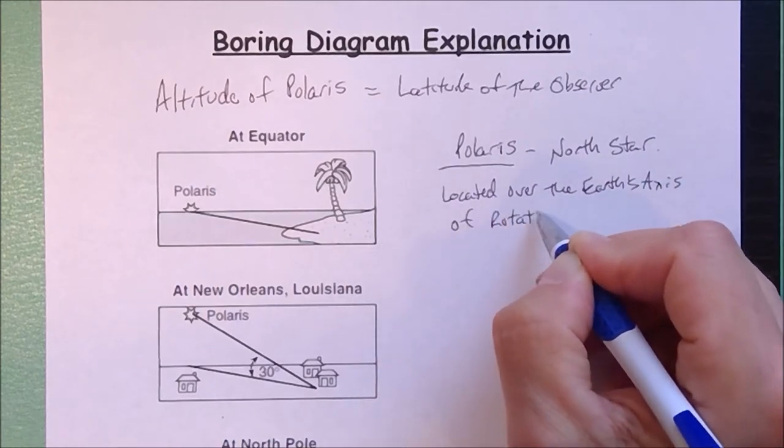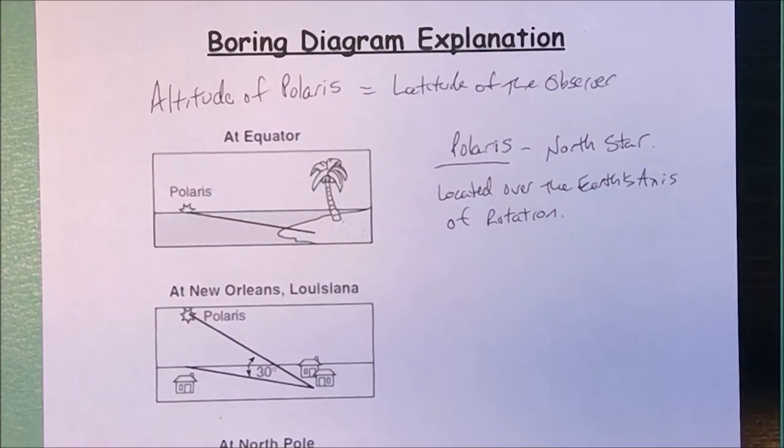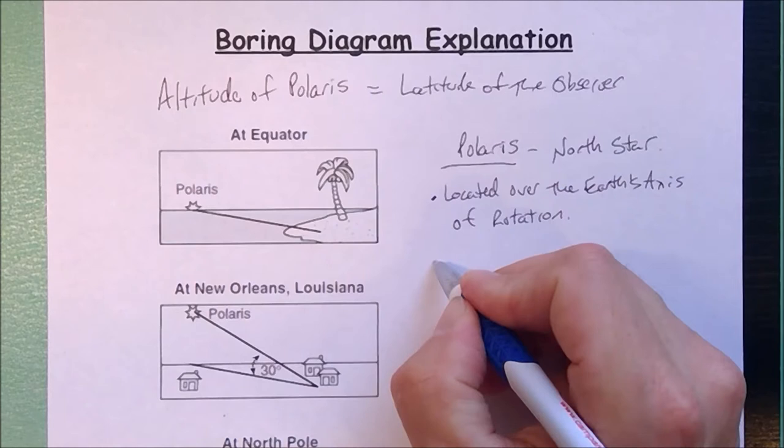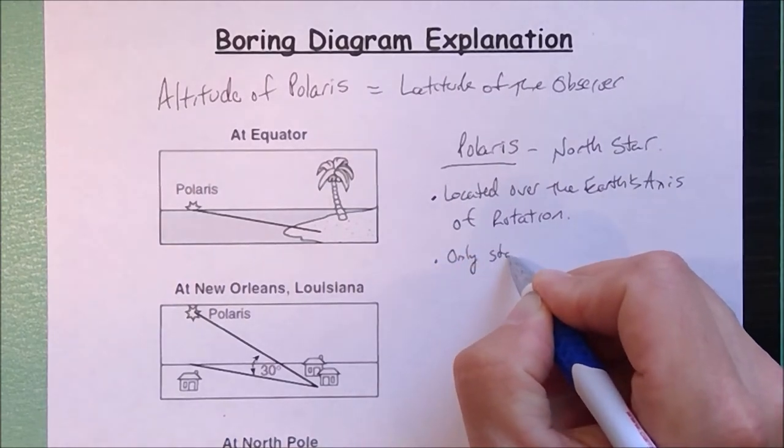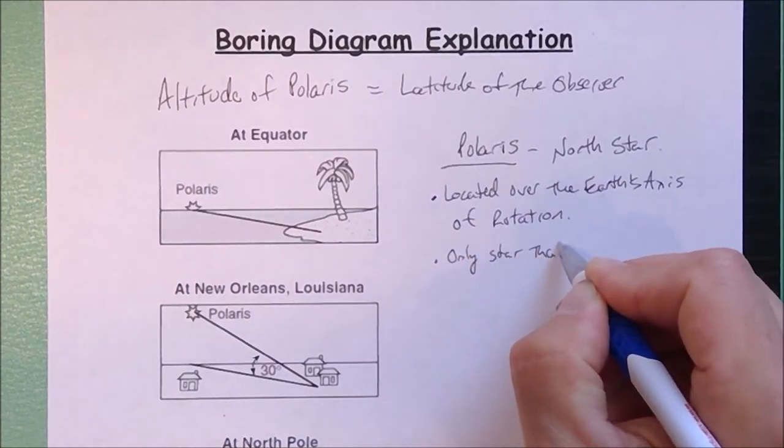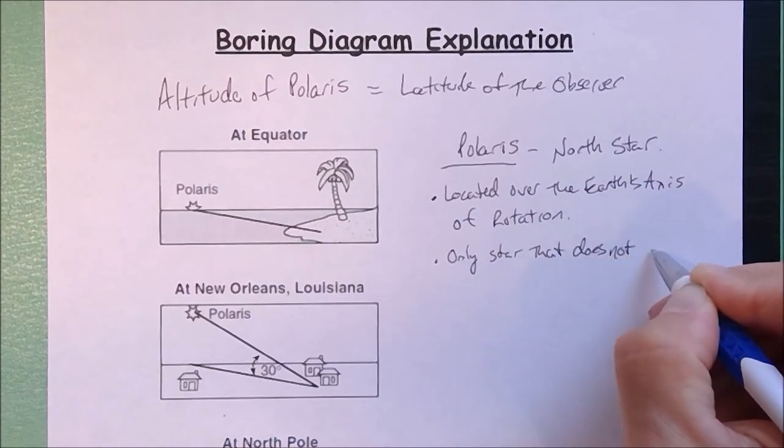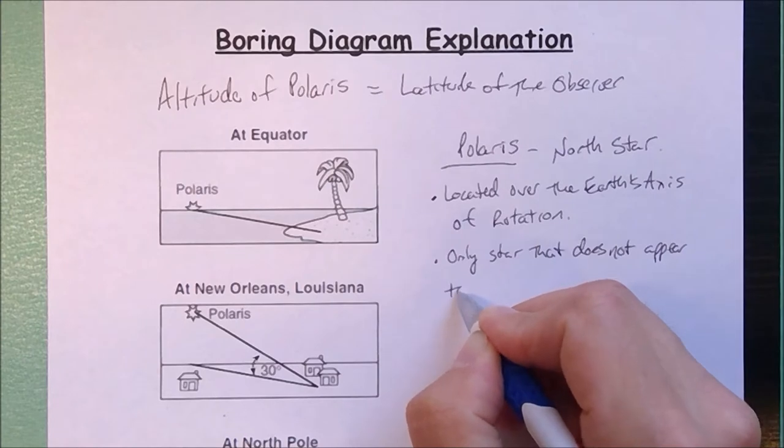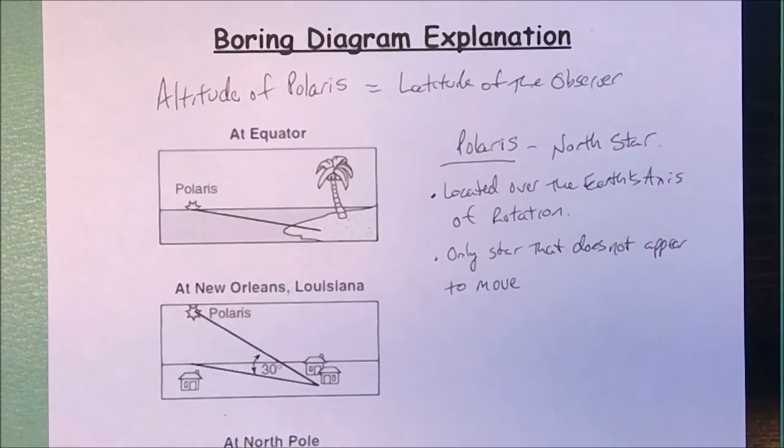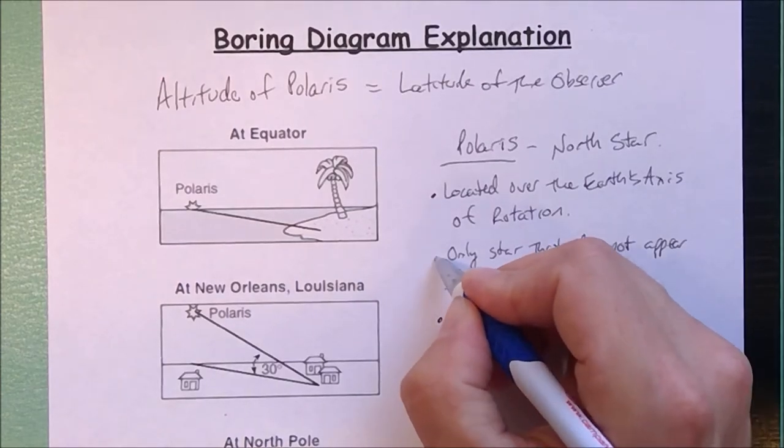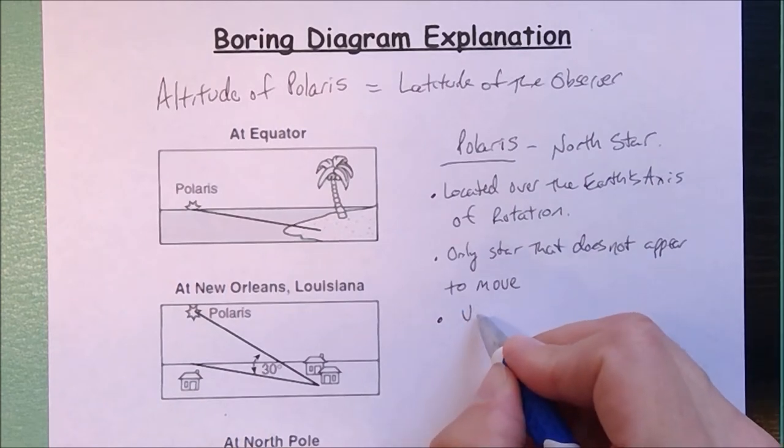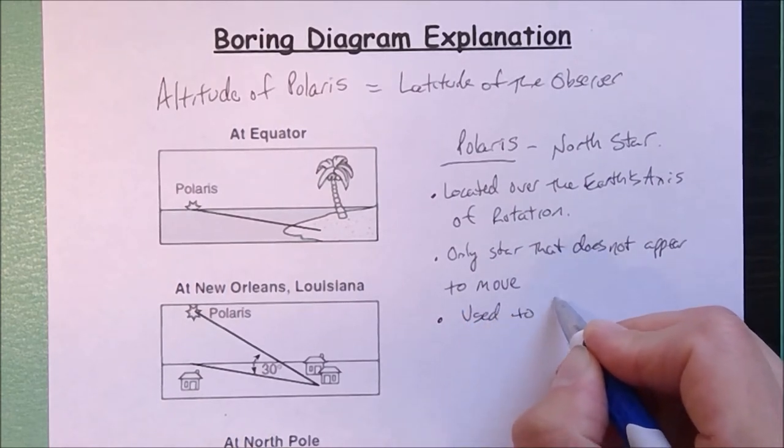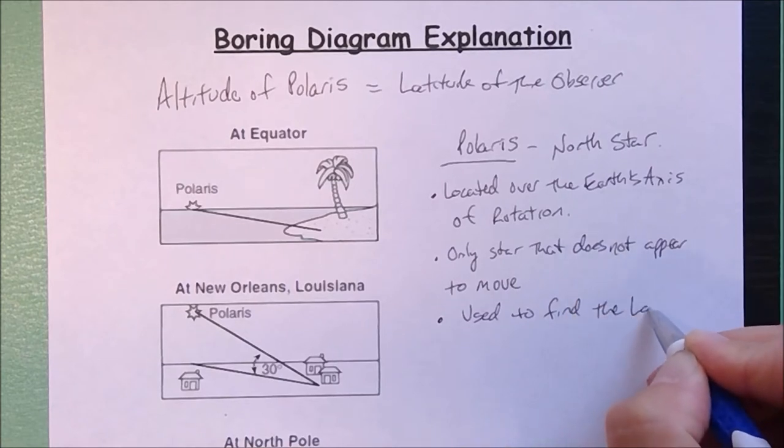Because it's directly above the Earth's axis of rotation, Polaris is the only star that does not appear to move at night. All of the other stars appear to move 15 degrees per hour, but Polaris remains stationary. Another thing you should know about Polaris is that it can be used to find the latitude of the observer.